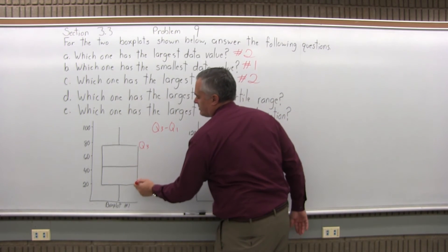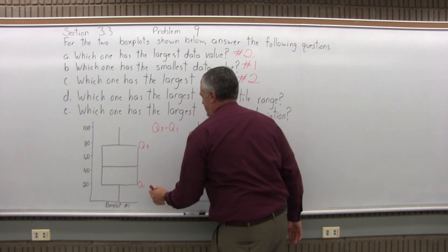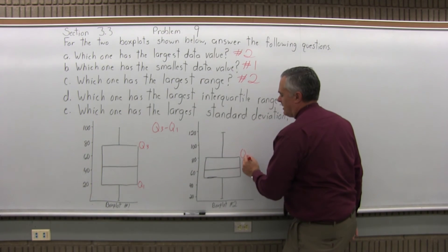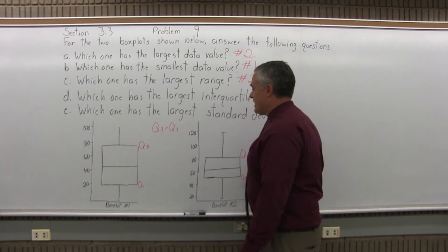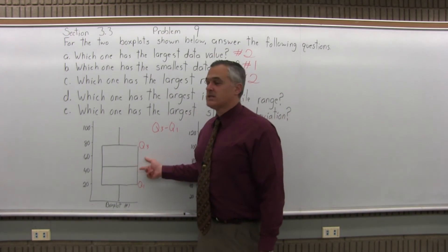the top edge of the box being Q3 and the lower edge of the box being Q1. So the larger interquartile range does definitely seem to be box plot number one.